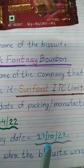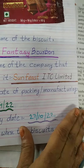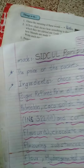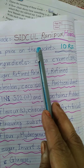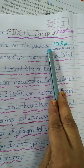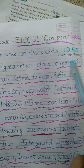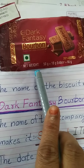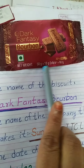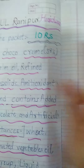You have to note that down. Next question: place where the biscuits were made — SIDCUL, Ranipur, Haridwar, India. The price on the packet is 10 rupees for 50 grams. The net weight is 50 grams plus 10 grams extra, that is 60 grams. The amount is 10 rupees.